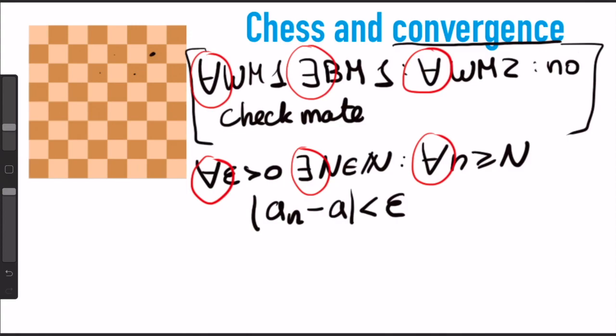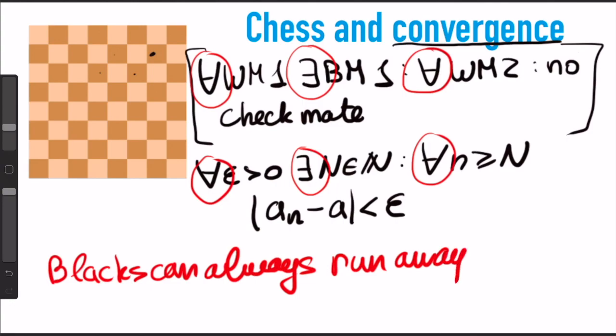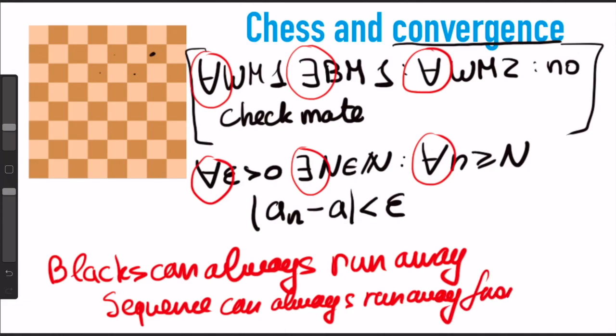And I think that's quite interesting. So what is the analogy? In the first case, we have that blacks can always run away. And in the second case, we have that the sequence can always run away from epsilon.